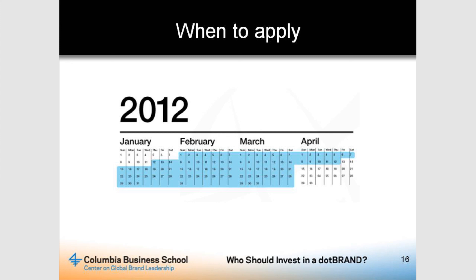If you apply and are in the first batch, you'd expect to get a green light within about seven months. But the batch processing will be going well into 2013, depending on where people get chosen in the queue.